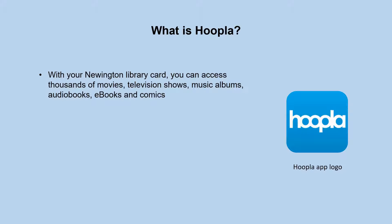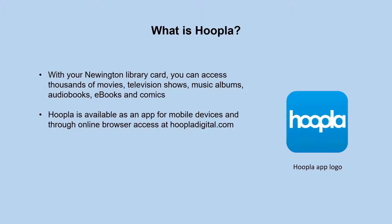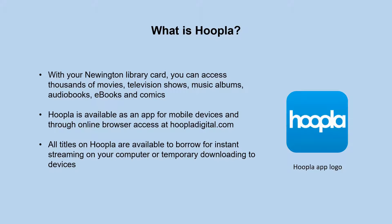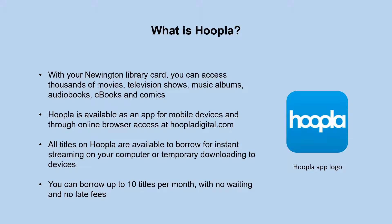You can also access Hoopla with a library card from a different town library, as long as your home library subscribes to Hoopla, so you can check with them to find that out. Hoopla is available as an app for mobile devices and through online browser access on your computer at hoopladigital.com. All titles on Hoopla are available to borrow for instant streaming on your computer or temporary downloading to your devices. You can borrow up to 10 titles per month with your Newington card with no waiting and no late fees. Other libraries may have different limits for how many titles you can check out per month, so definitely check with your home library.